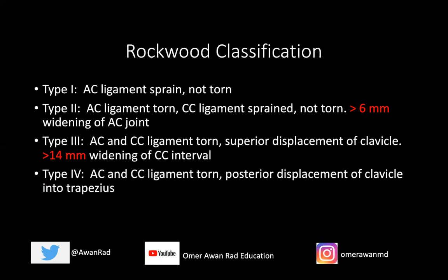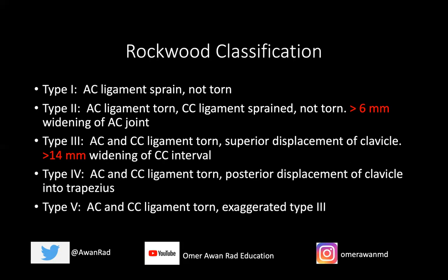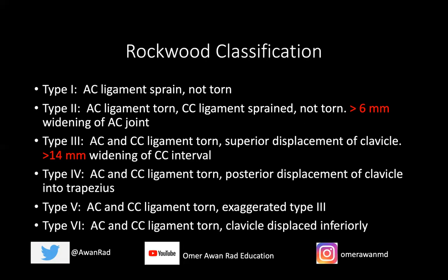Types four, five, and six are rare but can occur. Type four is when both the AC and CC ligaments are torn, but with posterior displacement of the clavicle into the trapezius — an axillary view is helpful to diagnose this. Type five is an exaggerated type three where the clavicle travels markedly superiorly all the way into the subcutaneous tissues. Type six is when the AC and CC ligaments are torn but instead of going superiorly, the clavicle goes inferiorly — also quite rare.